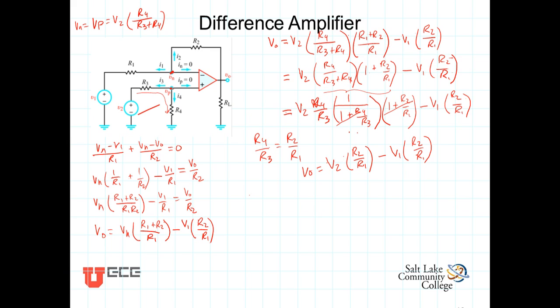Now if we factor out this R2 over R1, we get then V out is equal to R2 over R1 times V2 minus V1. And from here you can see then why this is called a difference amplifier. The output voltage is equal to a scaled version of this source voltage minus this source voltage. The usefulness of this amplifier configuration can't be overstated.